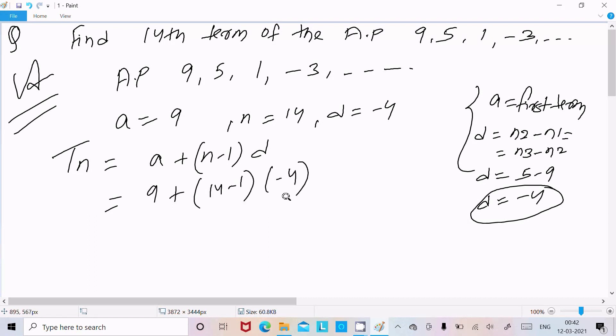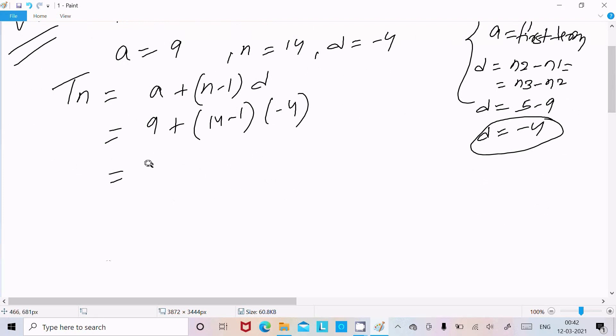So we have 9 + (14-1) × (-4). That's 14 minus 1 equals 13, times -4, which gives us 9 + 13 × (-4) = 9 + (-52).